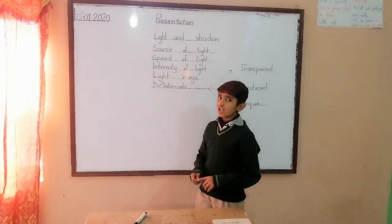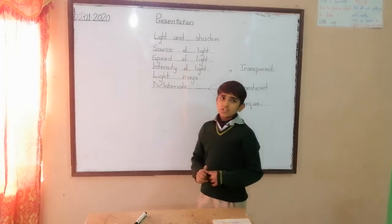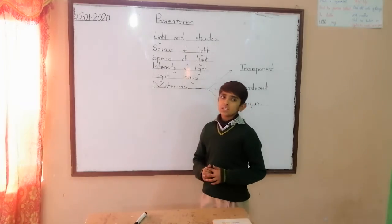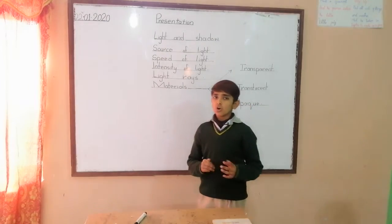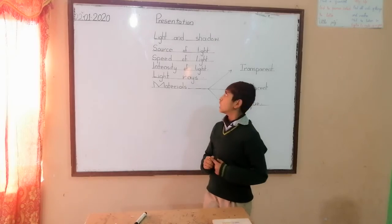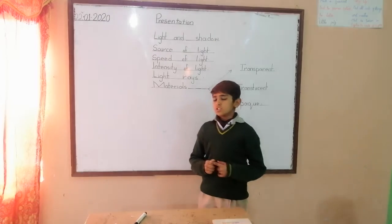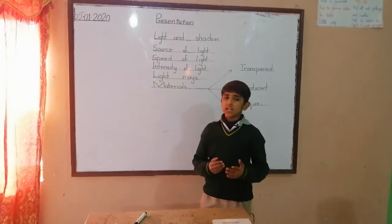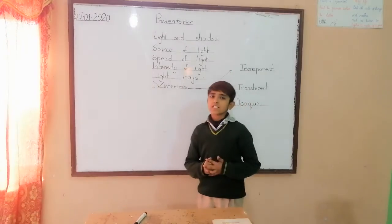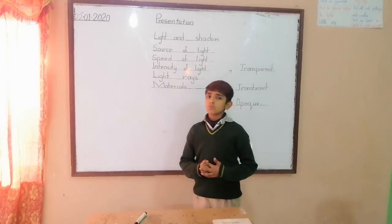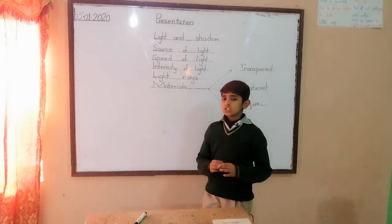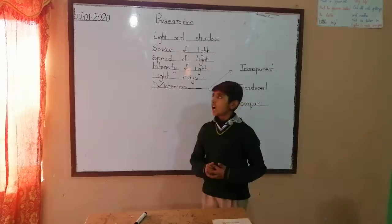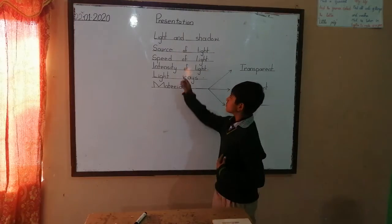First of all, source of light. There are two types of objects: luminous object and non-luminous object. Luminous objects are those that produce their own light, like a bulb or candle. Non-luminous objects do not produce their own light, like the moon.